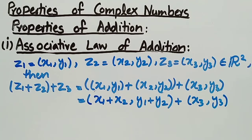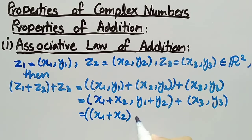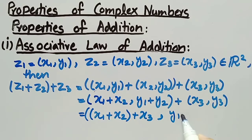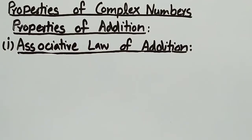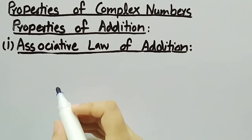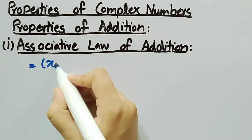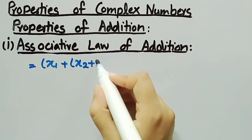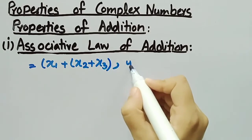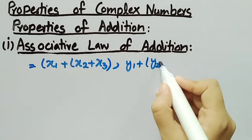Now, we will again use the definition of addition of complex numbers and write it as (X1 plus X2 plus X3, Y1 plus Y2 plus Y3). By the associative law in real numbers, we can write it as (X1 plus X2 plus X3, Y1 plus Y2 plus Y3).